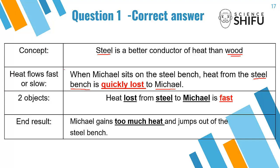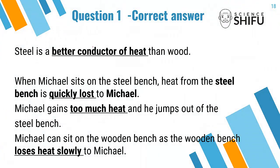These four general pointers are shared in the online classes. Re-paraphrased into open-ended answer form: 'Steel is a better conductor of heat than wood. When Micah sits on the steel bench, heat from the steel bench is quickly lost to Micah, and Micah gains too much heat and jumps out. Therefore, Micah can continue to sit on the wooden bench as the wooden bench loses heat slowly to Micah.' This question tests you on the perspective of Micah, not the bench itself.